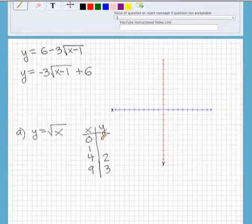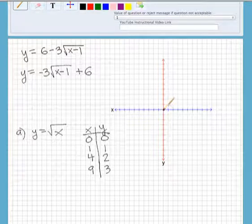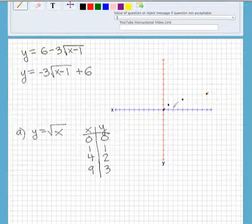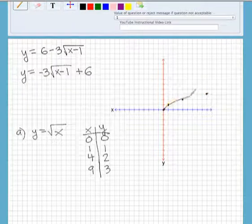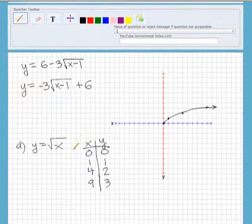If I plug in 0, we'll get 0. If I plug in 1, we'll get 1. So if we graph these points on our graph, 2, 9, 3, here we go. So here is what our graph looks like. It's basically a half a parabola. So that's what the square root function is. That's our parent function.